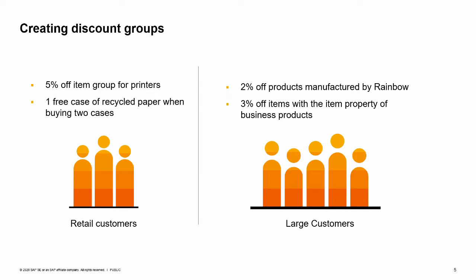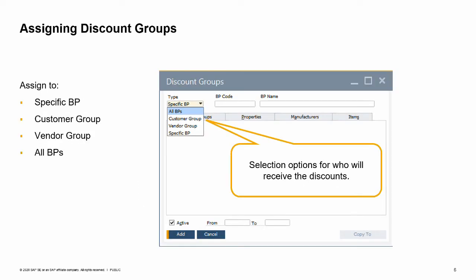Once you know the types of discounts you wish to group together, the first step in creating the discount group is to choose the business partners the discounts will apply to. Discounts can be assigned not only to specific business partners, but to business partner groups such as vendor or customer groups, or even to all business partners. Because you can assign a discount for groups and for all business partners, SAP has provided the option to exclude specific business partners from discount groups. We will come back to that later in this topic.